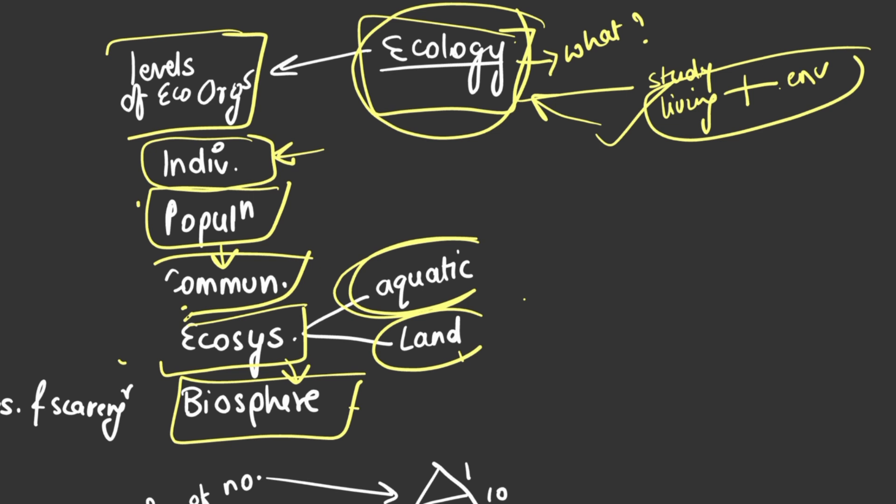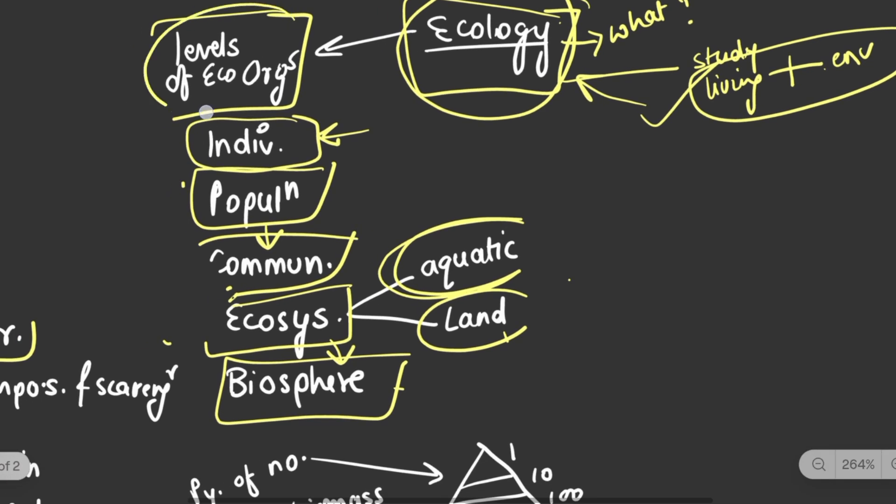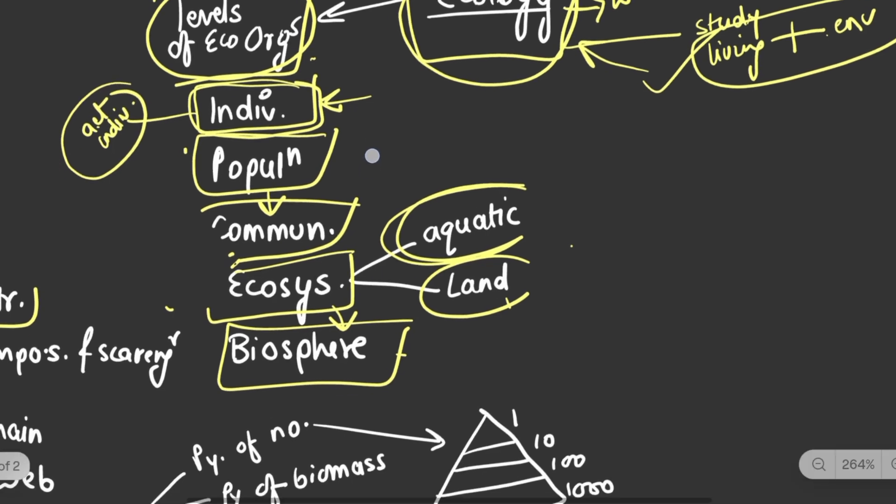Next is levels of ecological organization. The first level is the individual level. An individual is something that is able to act or function independently. We are individuals like ourselves - plants, animals, bacteria, fungi, any organism individually. This is the lowest level of organization.